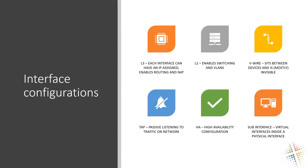There are a whole lot of interfaces on the physical device and many different ways to configure them. The first is a Layer 3 configuration — Layer 3 is where you configure IP addresses, giving each interface a unique IP address, which enables IP-related functionality such as routing and NAT. The next is Layer 2, which corresponds to switching and VLANs, dealing with MAC addresses and VLAN switching. If you want the device to act as a switch rather than a router, you enable the interface as Layer 2.